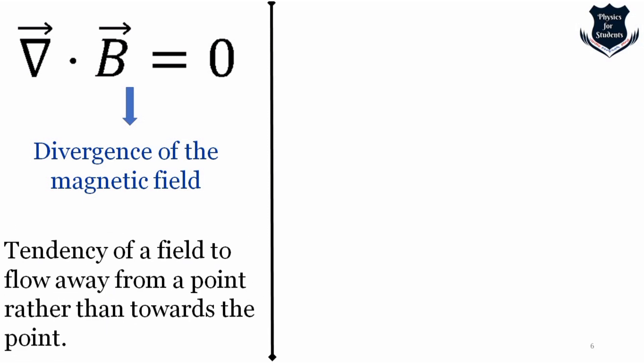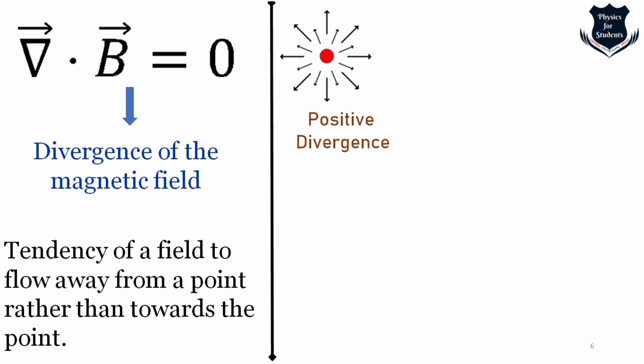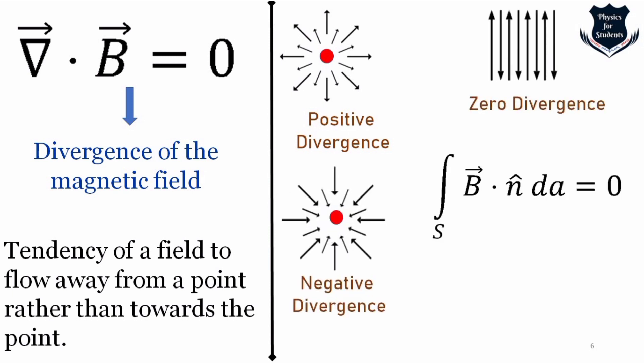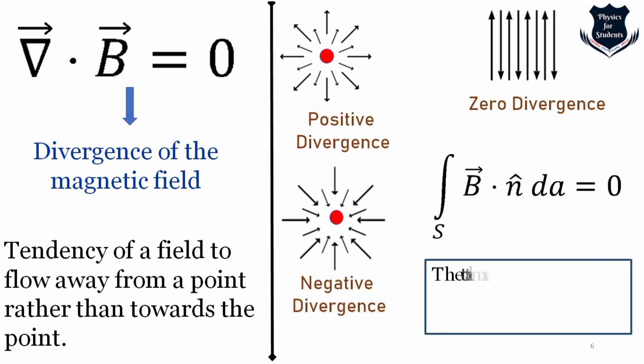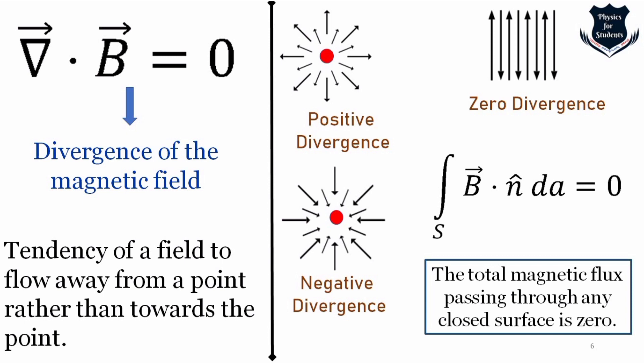Since divergence is by definition the tendency of a field to flow away from a point more strongly than towards it, and since no point sources or sinks of the magnetic field have been found, the amount of incoming field is exactly the same as the amount of outgoing field at every point. These are simple examples of divergence — positive, negative, and zero. The integral form of Gauss's law also says that the total magnetic flux passing through any closed surface is zero.